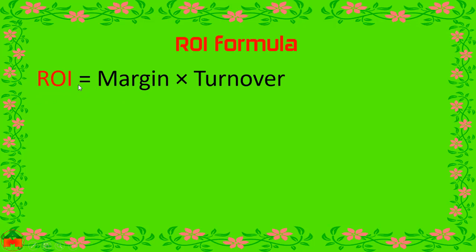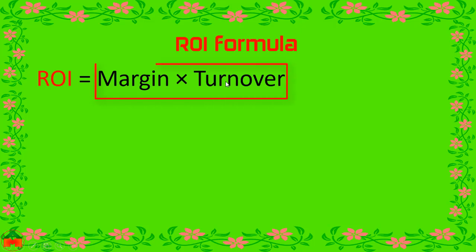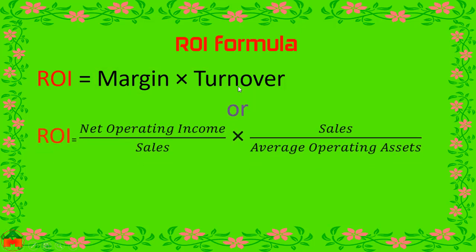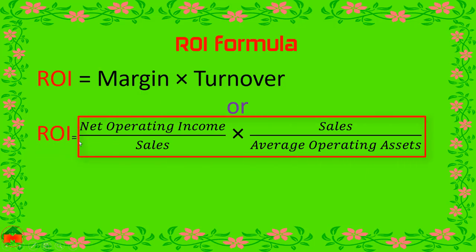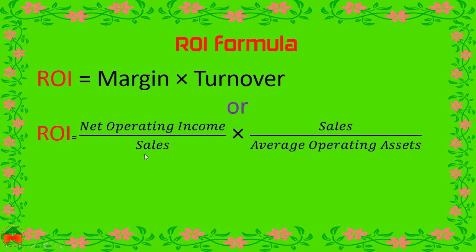ROI can be calculated by multiplying margin and turnover. The broad formula is: net operating income divided by sales — this is the margin component — multiplied by sales divided by average operating assets — this is the turnover component.